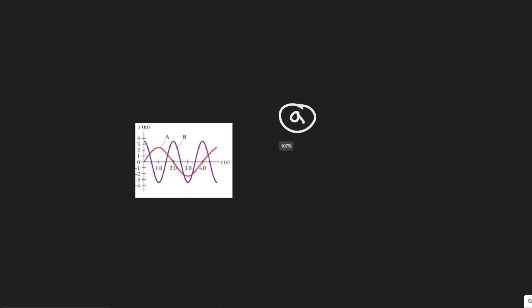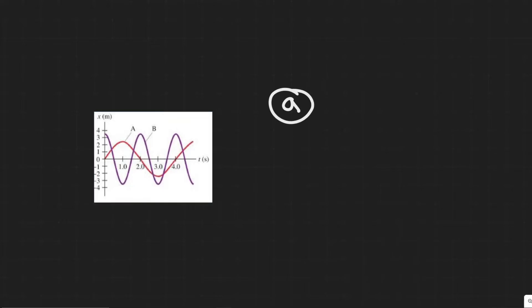Okay, so in this problem we're told the figure shows two examples of simple harmonic motion labeled A and B. For each, what is A the amplitude, B the frequency, C the period, and D write the equations for both A and B in form of sine or cosine. So they give us this figure here and we're going to be finding a bunch of things and I think it's just easier to hop in.